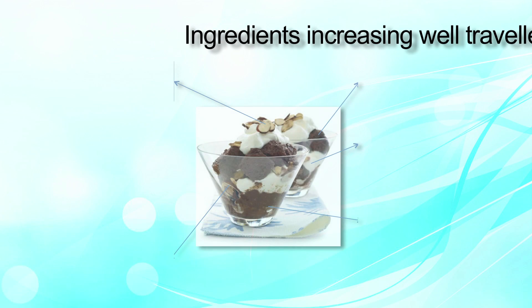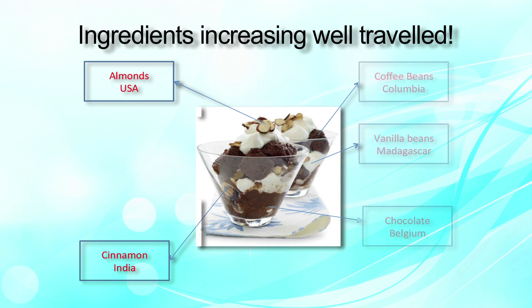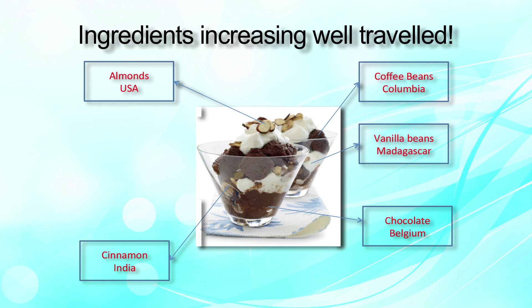Today, whatever we eat is not a single-ingredient product — it has various ingredients that make it a processed food. Take the example of pizza or ice cream. Most of the ingredients in ice cream, pizza, bakery products or many others come from various sources. Whatever we eat in Delhi or Mumbai, the ingredients may come from different parts of India or from abroad. For example, in an ice cream the almonds may come from the USA, cinnamon from India, and chocolate from Belgium. It is very important to know what food safety systems are adopted for those ingredients and what the safety status of each ingredient is.